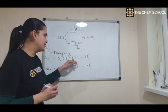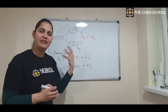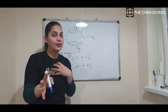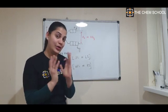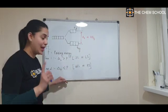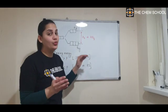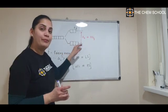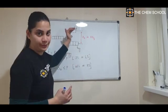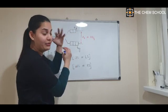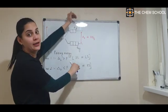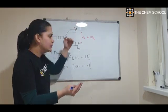For strong field (low spin) ligands, Case 1 applies: the 4th through 6th electrons pair within T2G, and T2G is completely filled before any electron enters EG. This happens because the Δo value is higher than the pairing energy P — the energy gap between T2G and EG is so large that it is energetically unfavorable for electrons to jump up, so pairing occurs in T2G instead.